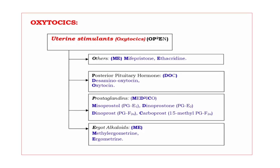When we come to the classification, oxytocics are classified into four different types. Here one mnemonic is given: OPEN, but we have to see the bold letters — OP² E. O means Others, P means Posterior Pituitary Hormone, one more P means Prostaglandins, E means Ergot Alkaloids.